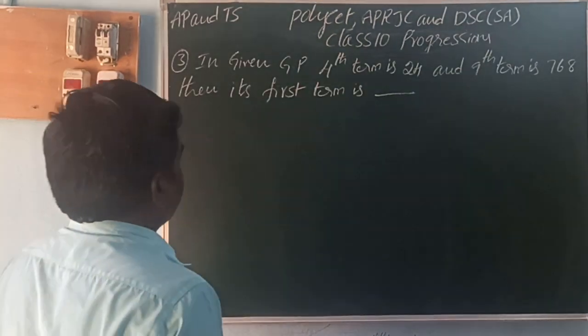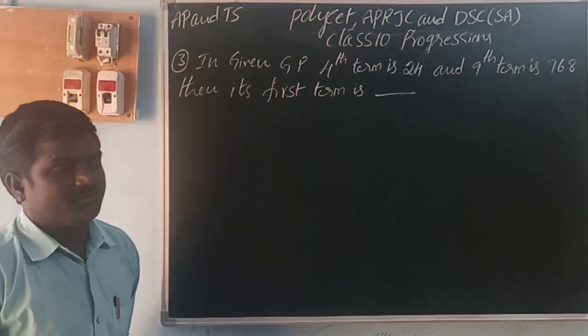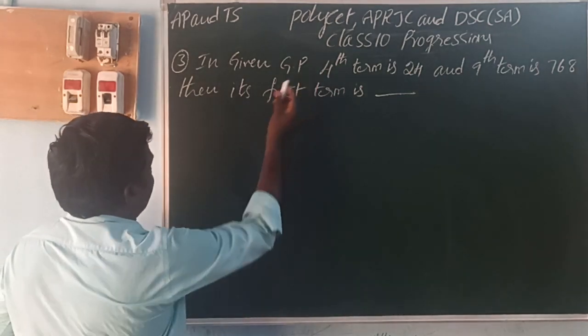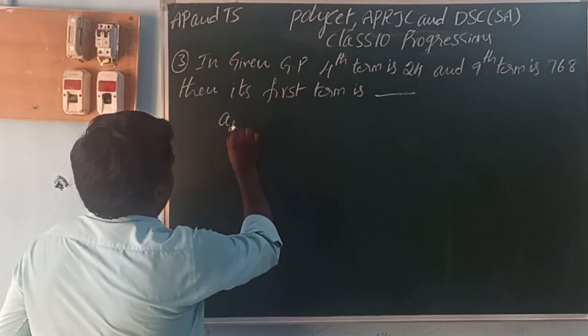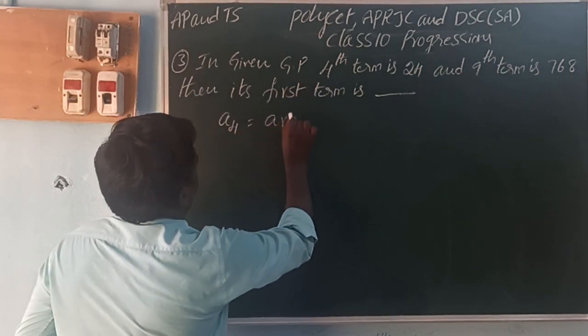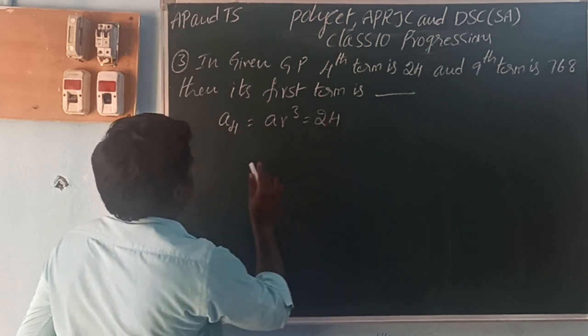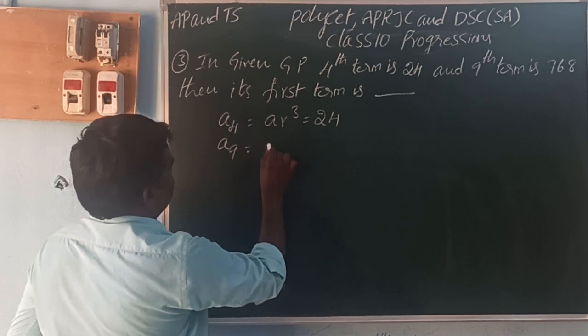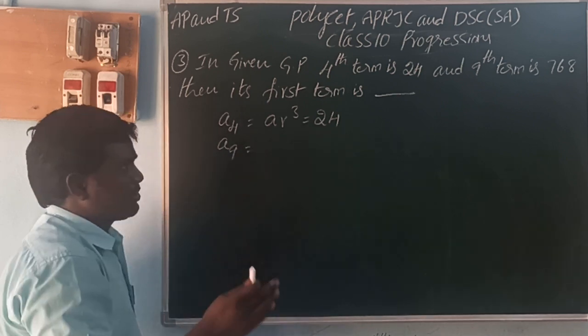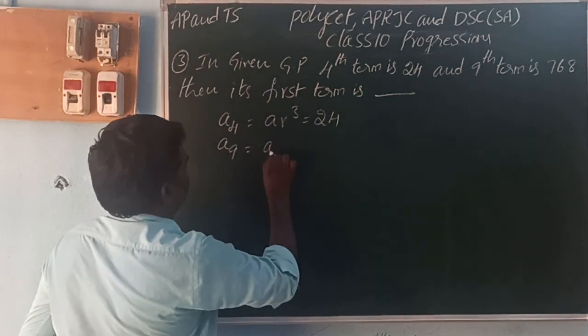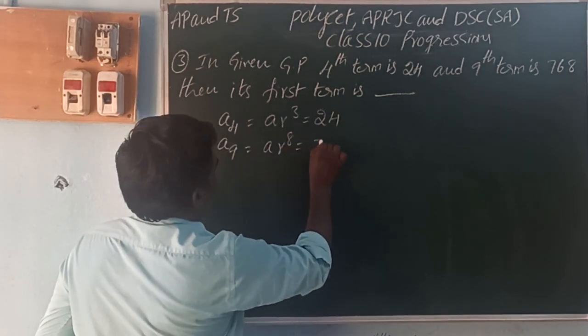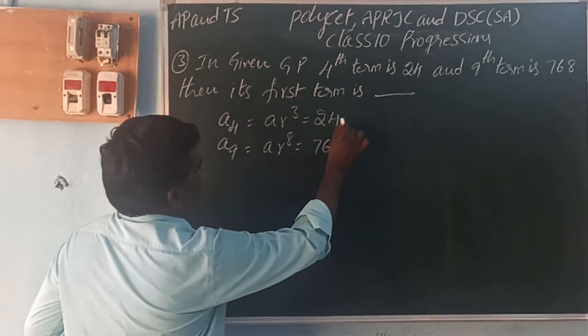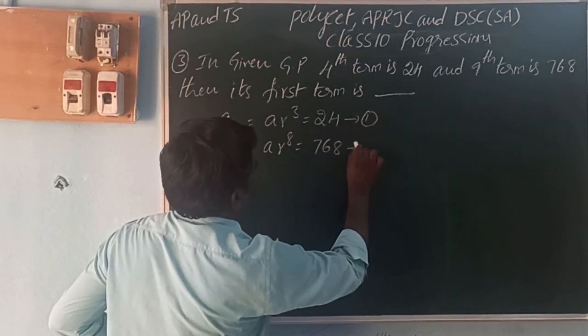Next, in given GP, fourth term is 24, ninth term is 768. Find the first term. Fourth term A4 = A * R^3 = 24. Ninth term A9 = A * R^8 = 768. What is the first equation? Second equation divided by the first equation.